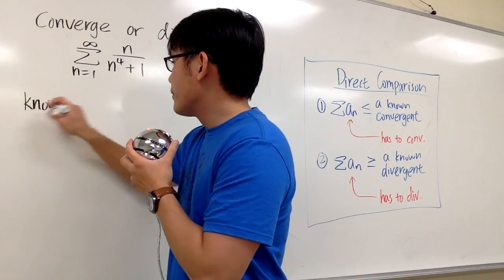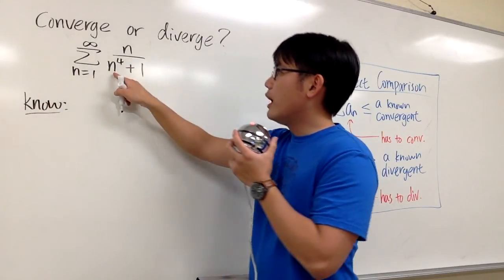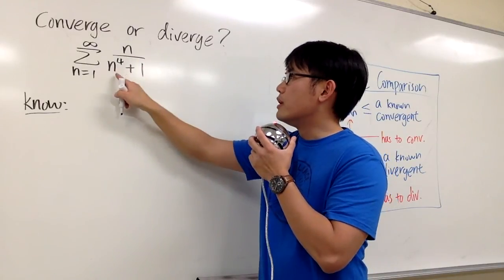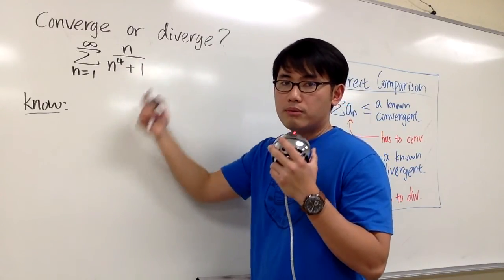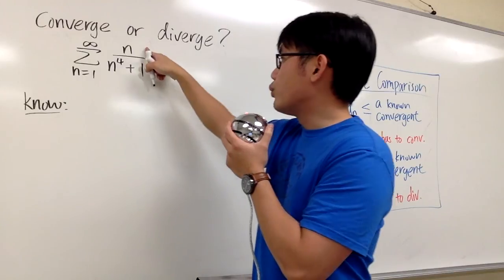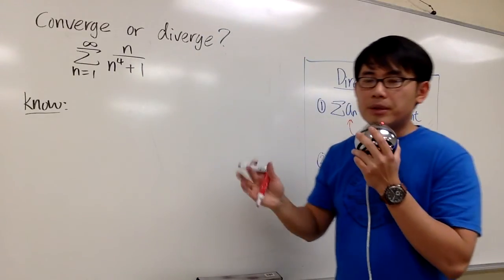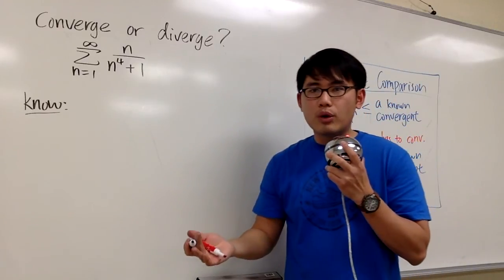What we know: Here we have n over n to the fourth power plus 1. Let's just consider n over n to the fourth, ignore the 1 pretty much. Usually when we have just polynomial divided by polynomial, let's just consider the dominating part, namely the highest power of n.